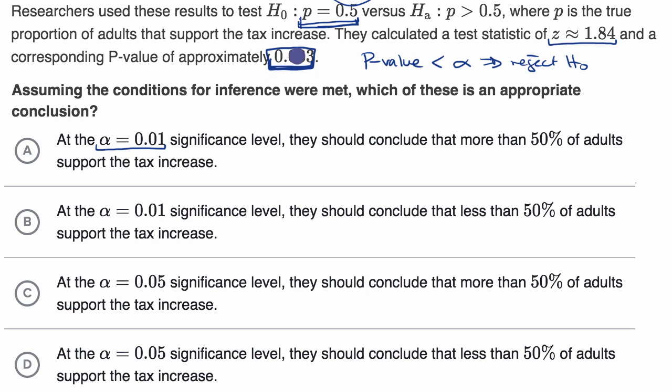So if alpha is one hundredth, the p-value right over here is over three hundredths, roughly 3.3%. So this is a situation where our p-value is greater than or equal to alpha. In fact, it's definitely greater than alpha here. And so here we would fail to reject our null hypothesis. And so we wouldn't conclude that more than 50% of adults support the tax increase, because remember, our null hypothesis is that 50% do, and we're failing to reject this.